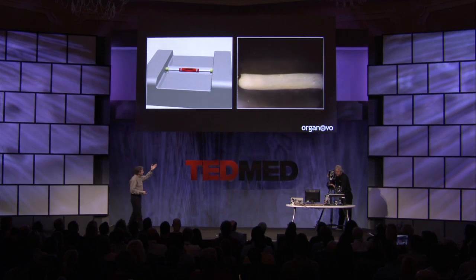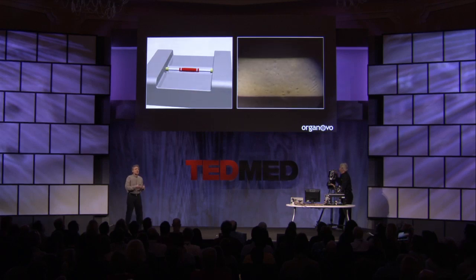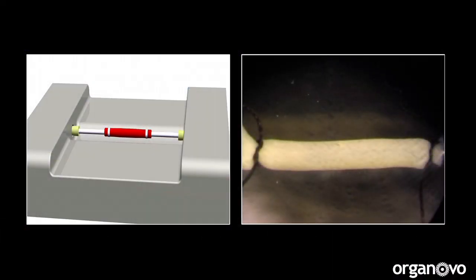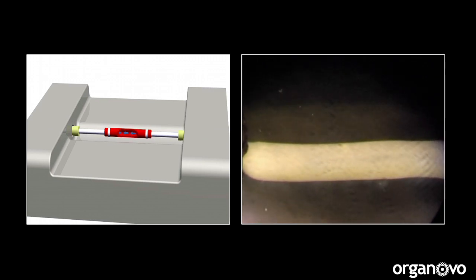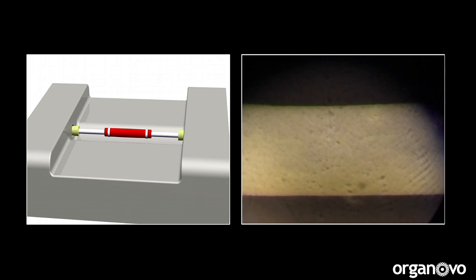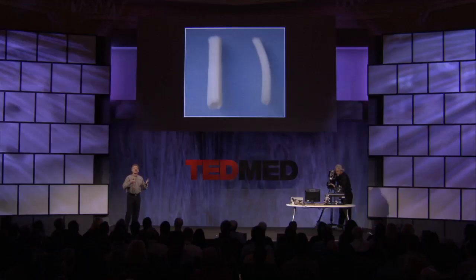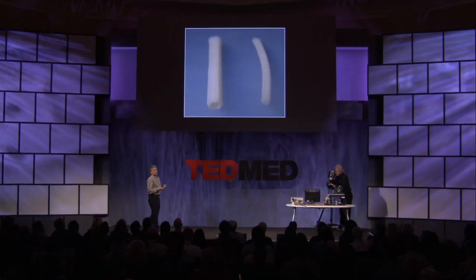Once fusion has taken place, we transfer the construct into a bioreactor — a device where near-physiological conditions are provided to the maturing structure. We mature this vascular graft and train it until it is ready for use, whether for testing drugs, as a disease model, or eventually for implantation. And here are some of those vascular tubes and structures that are ready for use.